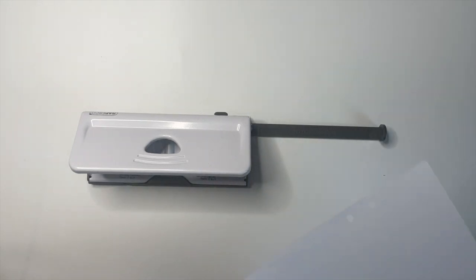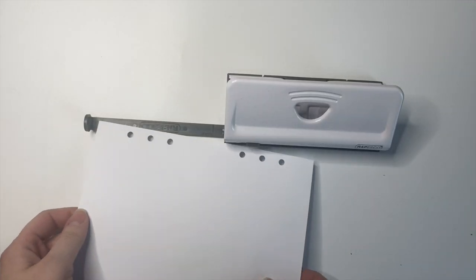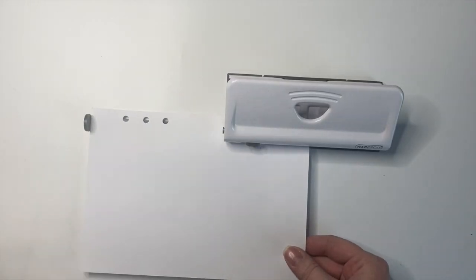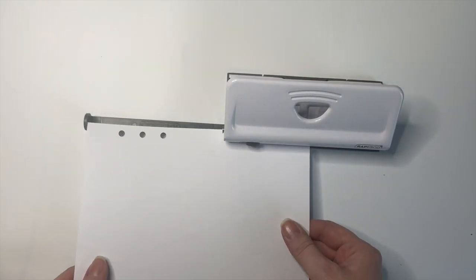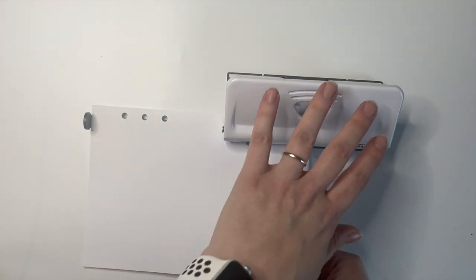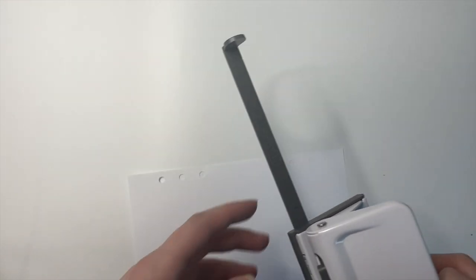So if you set it to that A5 marking, you can punch A5. But just to be aware, you have to flip the paper in order to be able to punch it appropriately. So you would put it in on one side and punch, and then you would flip the paper around and then punch again.